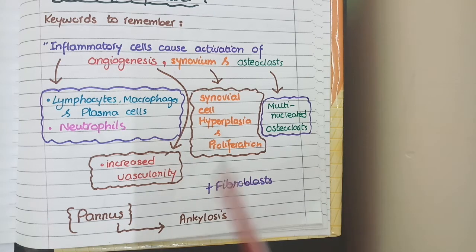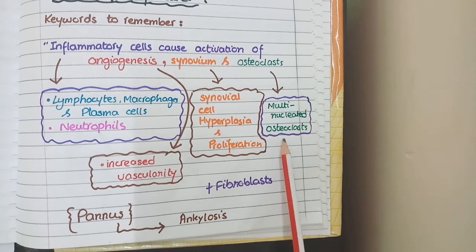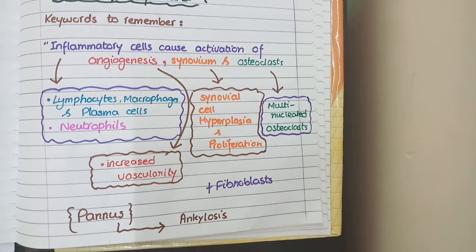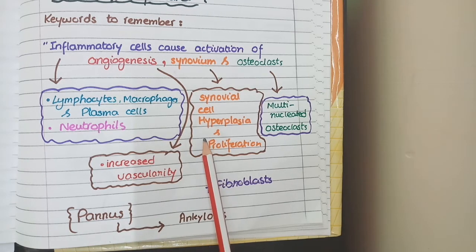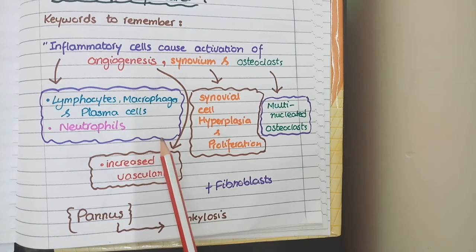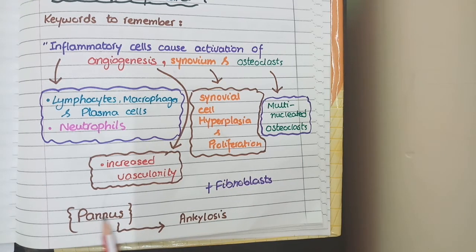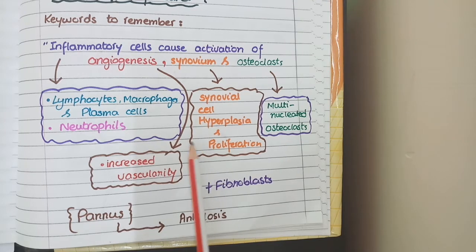The fourth keyword is activation of osteoclasts. So you will see multinucleated giant osteoclasts that cause degradation of bone at joints. Now this increased quantity of synovial cells and synovial matrix, along with inflammatory cells and fibrovascular tissue, is together known as PANAS. PANAS is a combination of increased synovial matrix along with inflammatory cells and fibrovascular tissue.